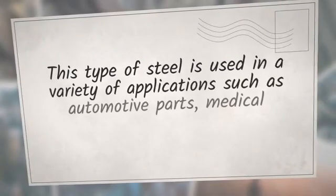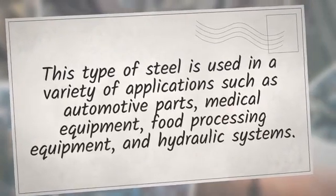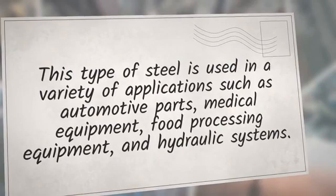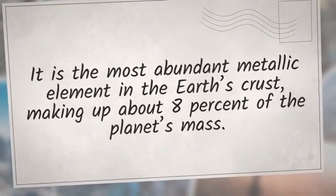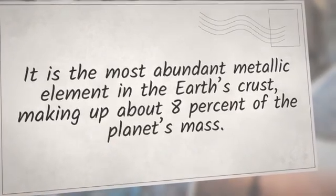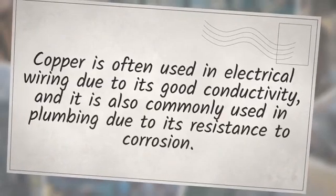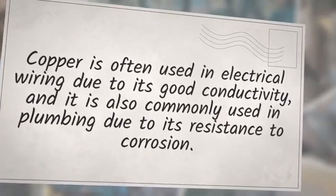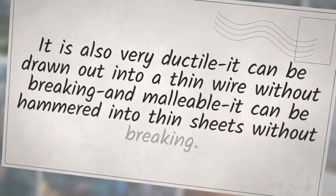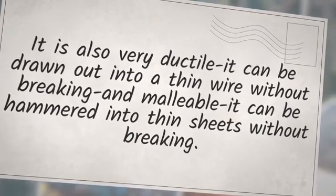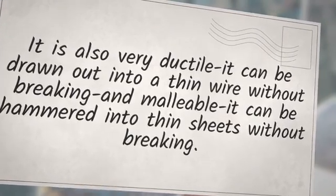Grade 2205 stainless steel is used in a variety of applications such as automotive parts, medical equipment, food processing equipment, and hydraulic systems. Copper is often used in electrical wiring due to its good conductivity, and it is also commonly used in plumbing due to its resistance to corrosion. It is also very ductile — it can be drawn out into a thin wire without breaking — and malleable, meaning it can be hammered into thin sheets without breaking.